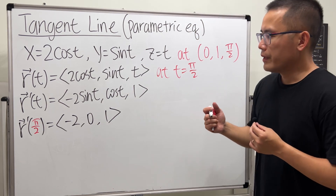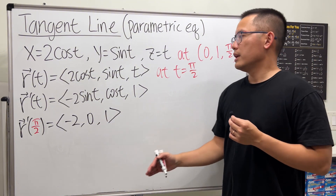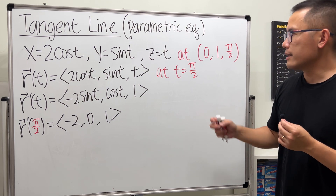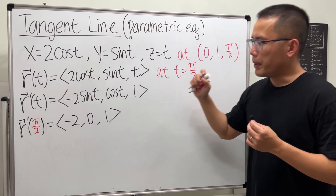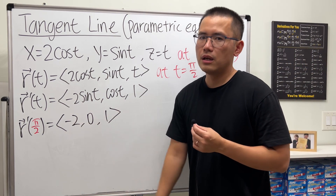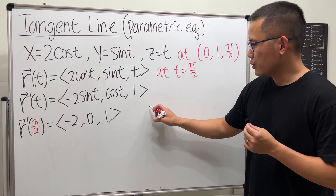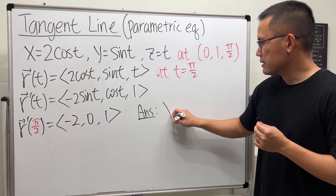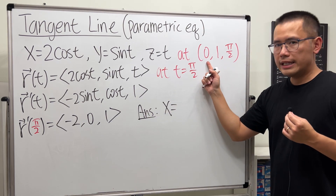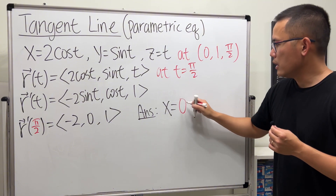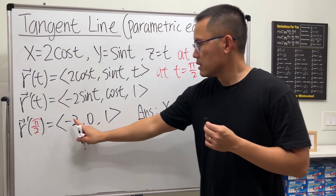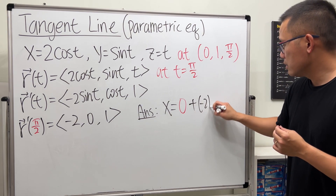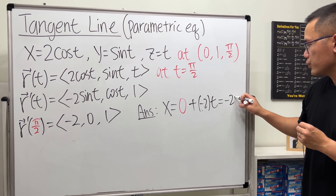So here's the idea: you treat the derivative vector as the slope, and the point on the curve as the starting point. To find the equation of a line through this point parallel to this vector, X is going to be our initial X value — x₀, which is 0 — plus negative 2 times T. So it's negative 2T.